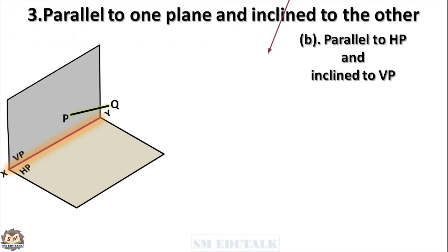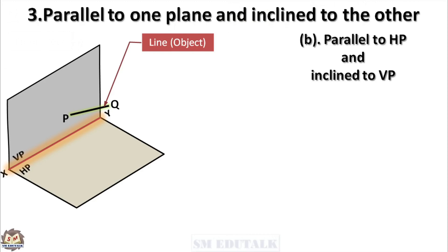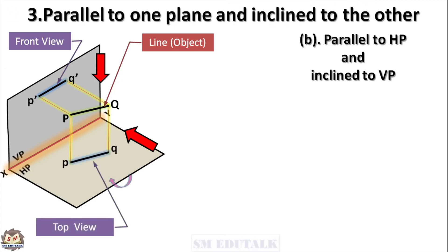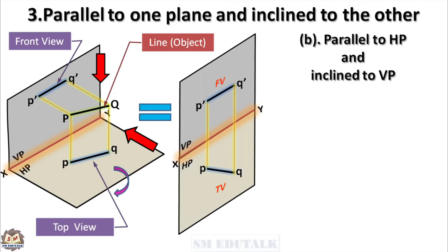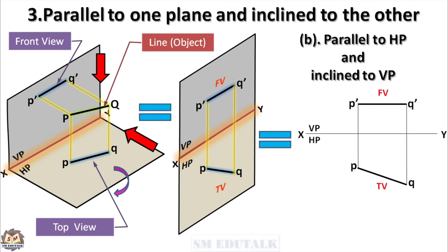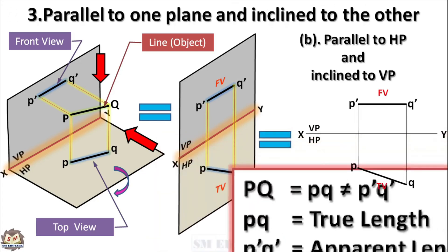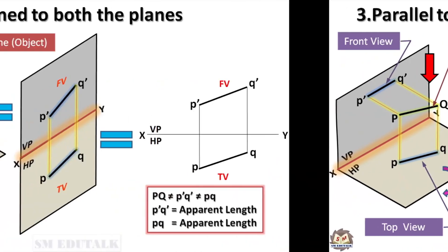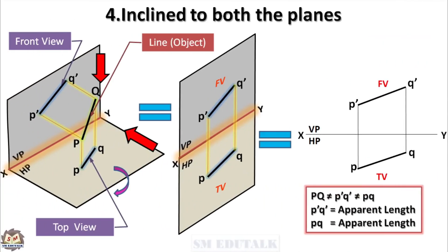The second subtype is parallel to HP and inclined to VP. The line PQ is kept parallel to HP and inclined to VP in the first quadrant. Its front view is projected as line P'Q' to the VP, and its top view is projected as line pq to the HP. After rotating the HP 90 degrees, both views are on the same plane. The top view pq should be drawn first because it has the true length, while the front view P'Q' has only the apparent length — unknown to us. We can only start drawing a view with known dimensions, so the top view is drawn first. Then project it above the XY line to get the front view P'Q'.